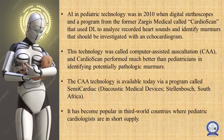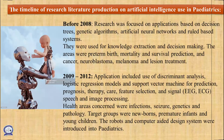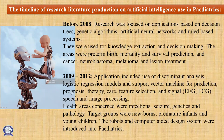Artificial intelligence in pediatric technology was used in 2010 when digital stethoscopes were converted into cardiac scans. This technology was called computer-assisted auscultation and is very useful in third-world countries where pediatric cardiologists are in short supply. Regarding the timeline of research on artificial intelligence using pediatrics: before 2008, research was focused on applications based on decision trees, genetic algorithms, artificial neural networks, and rules-based systems. They were used for knowledge extraction and decision making. The areas were preterm birth, mortality, survival prediction, and cancers such as neuroblastoma, melanoma, and lesion treatment.